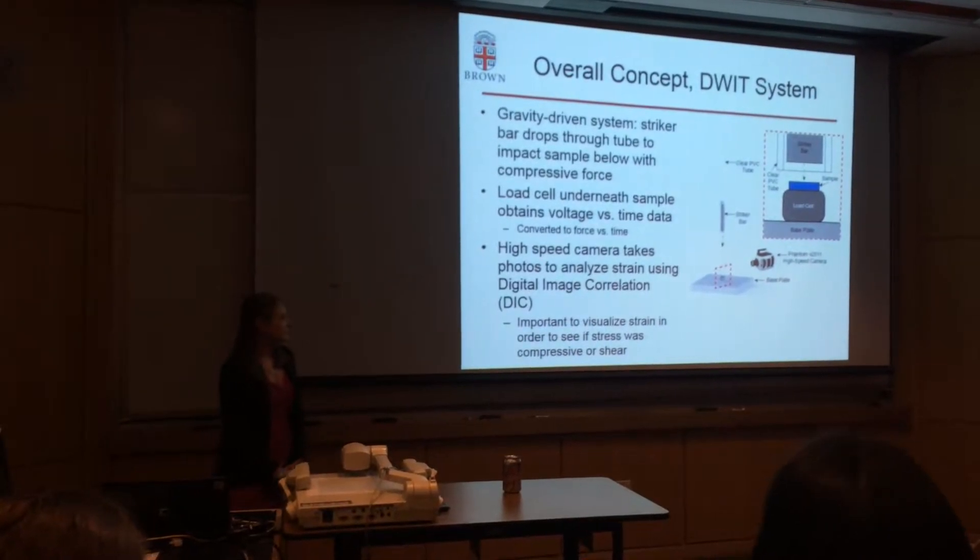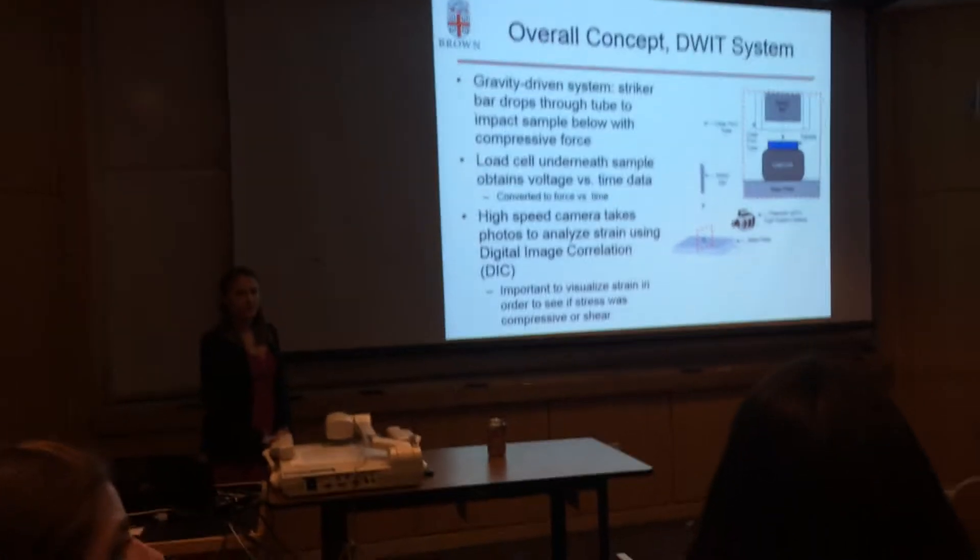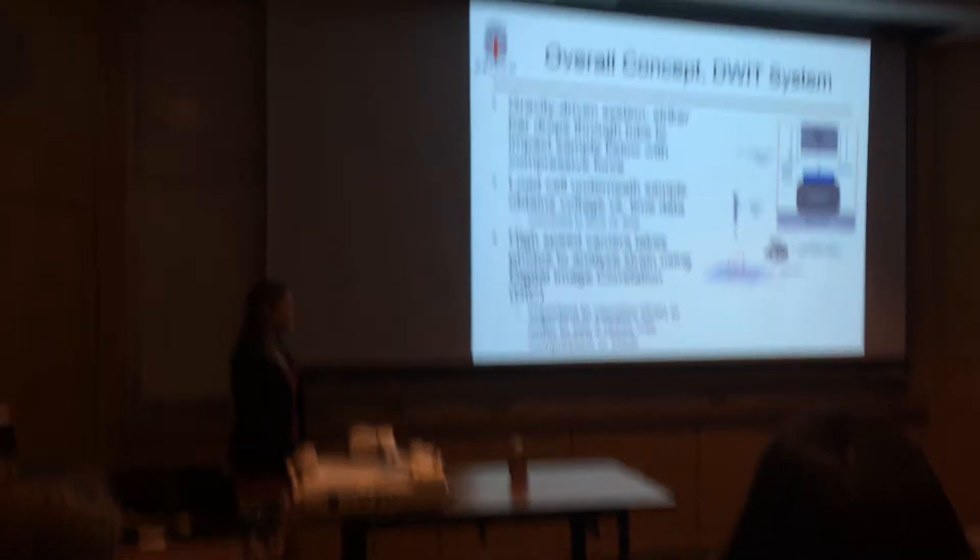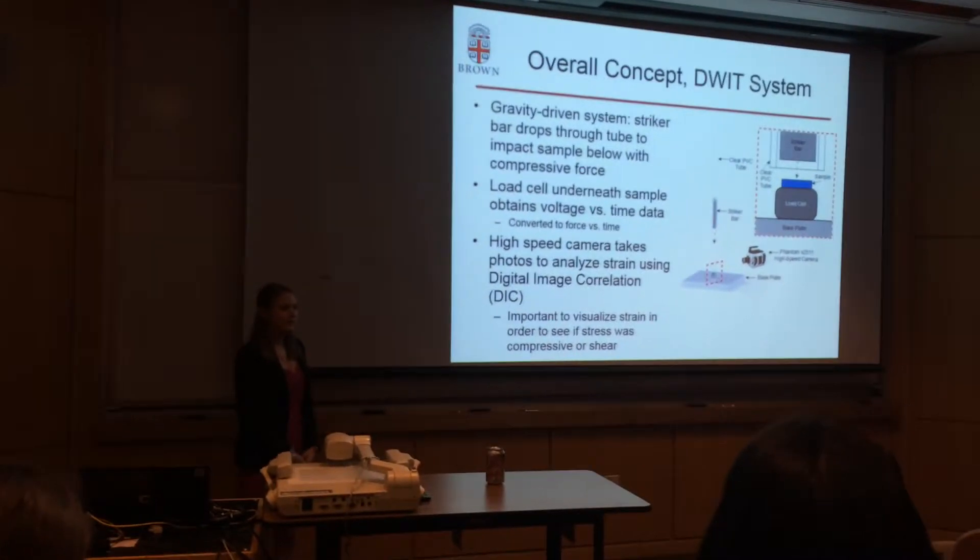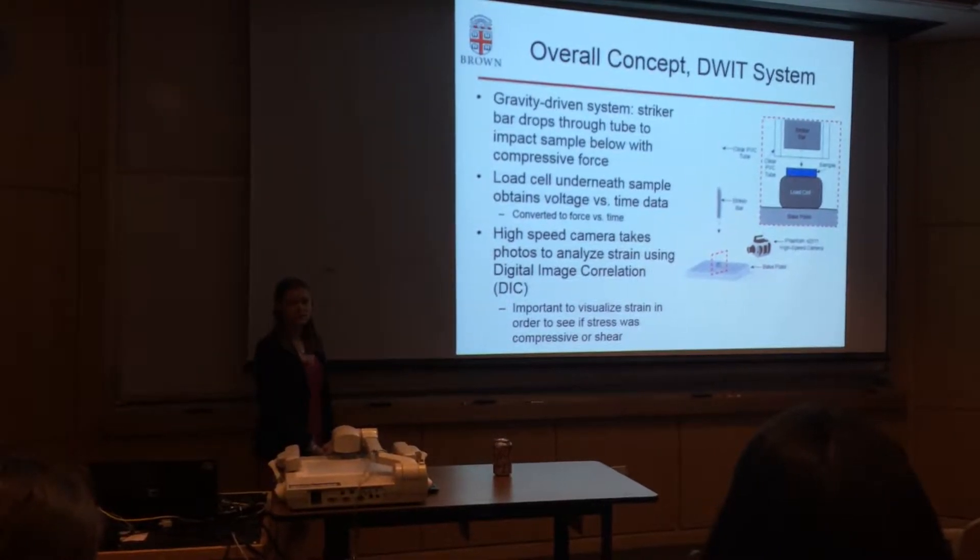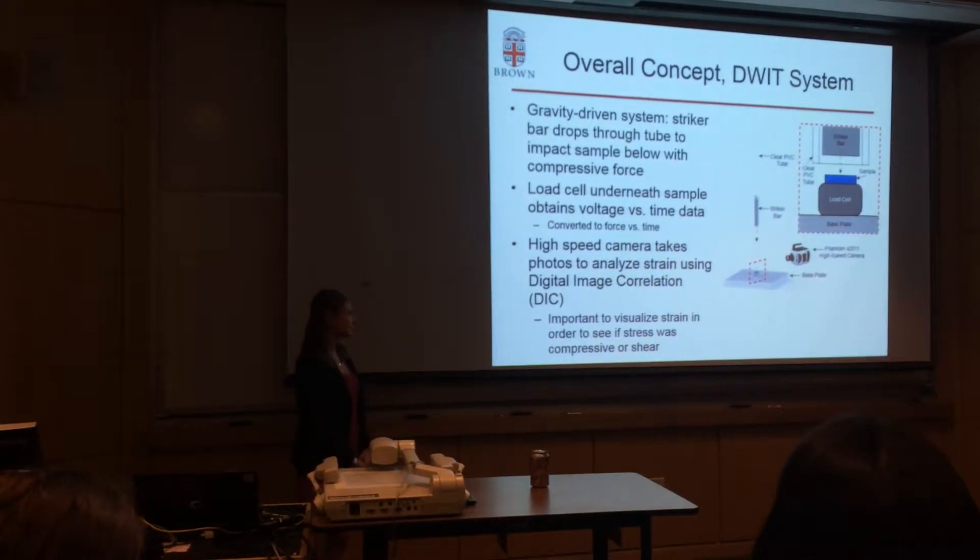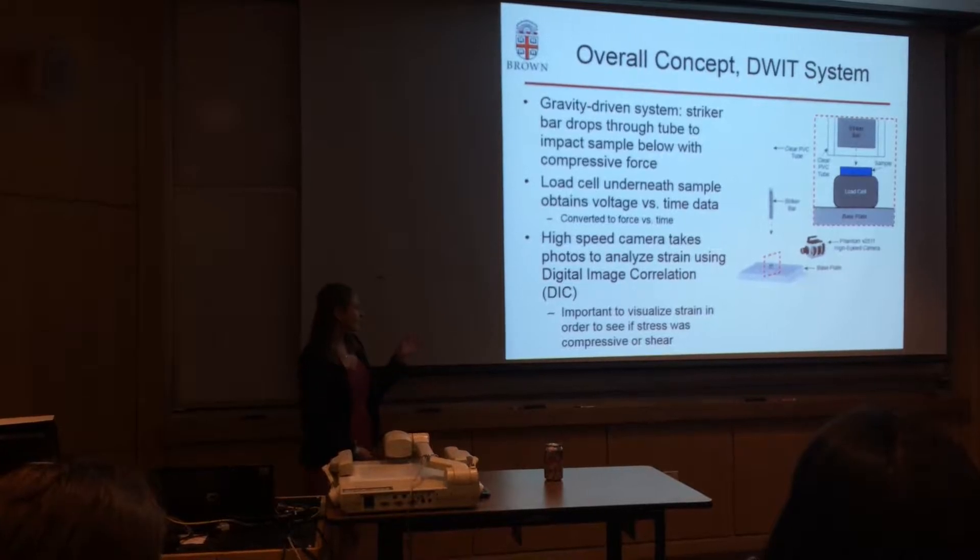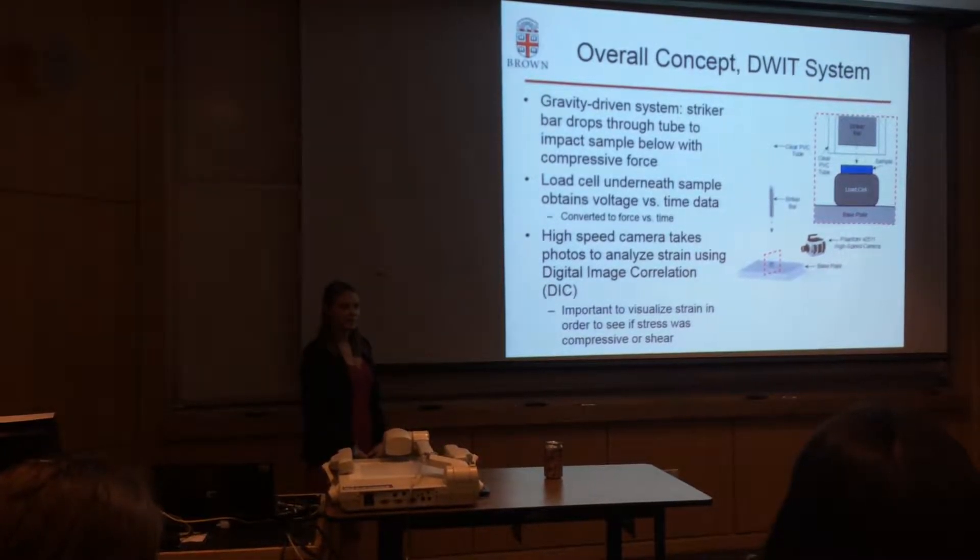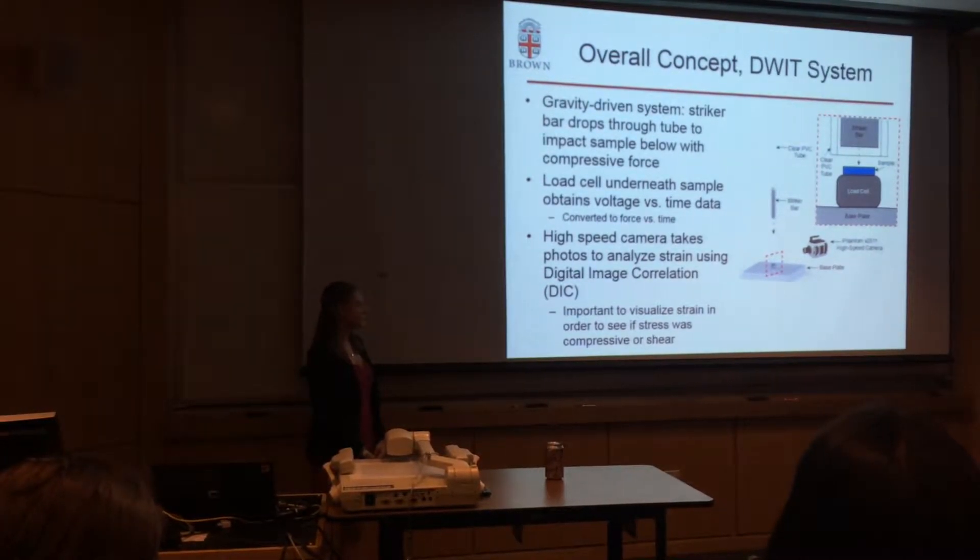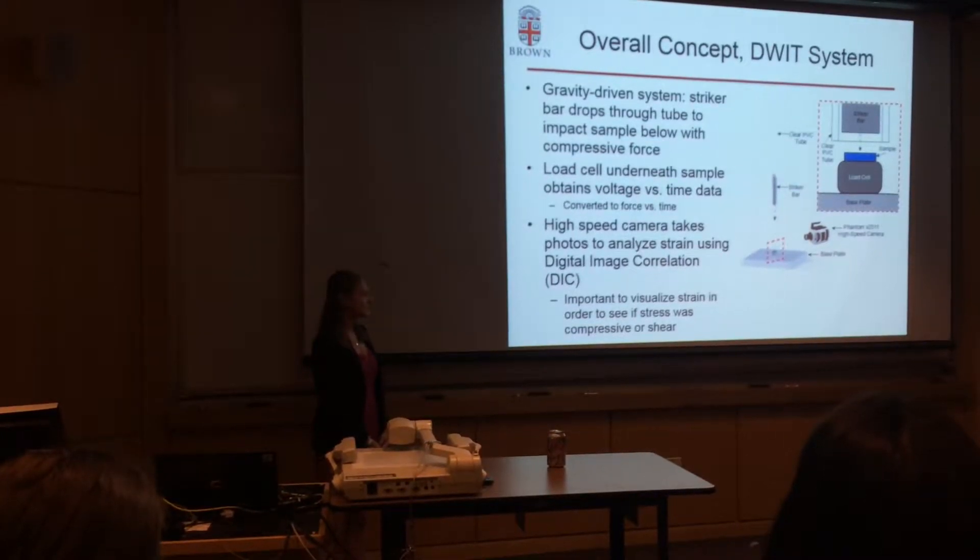The overall concept of the system is that a gravity driven striker bar drops through a tube to impact the sample below. A load cell underneath the sample obtains voltage versus time data which can be converted easily using a conversion factor into force versus time data. A high-speed camera takes photos of the sample as it undergoes the impact in order to analyze the strain using digital image correlation.